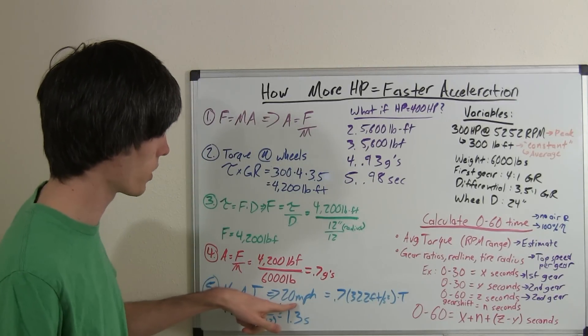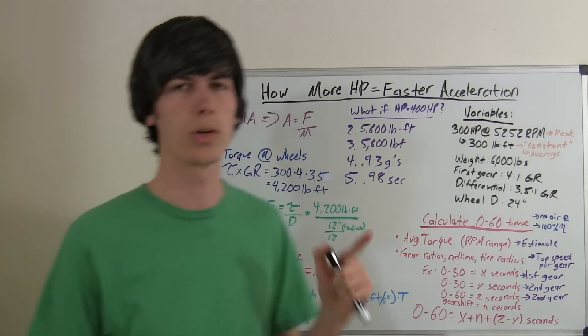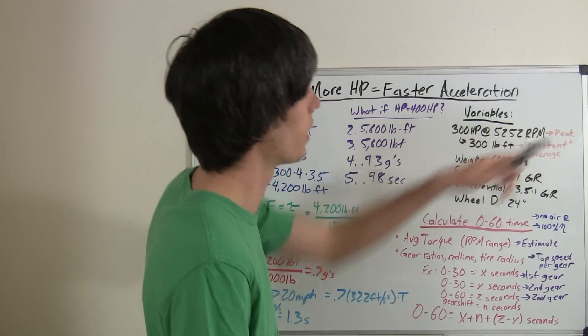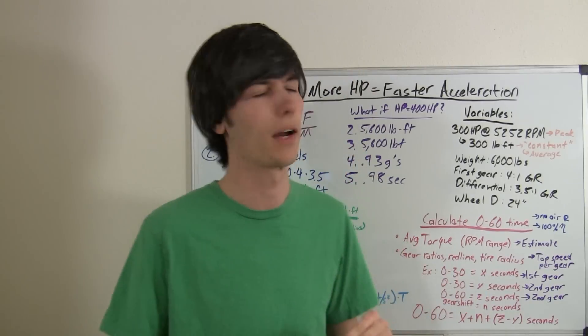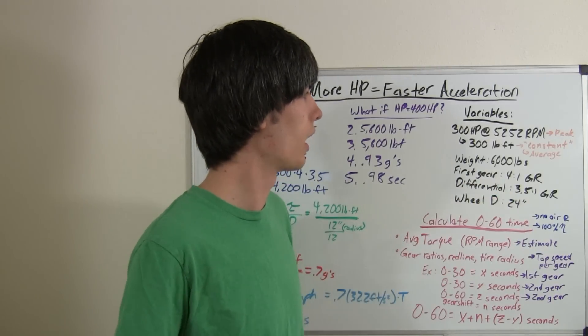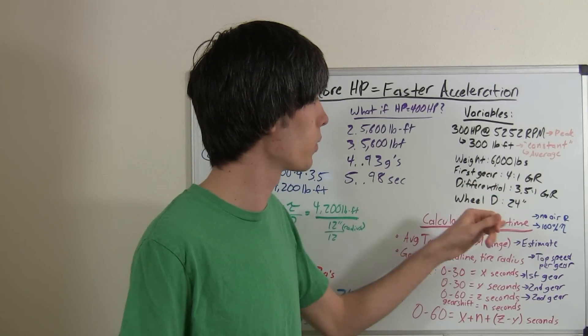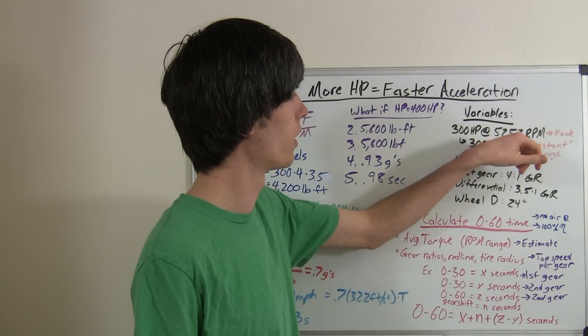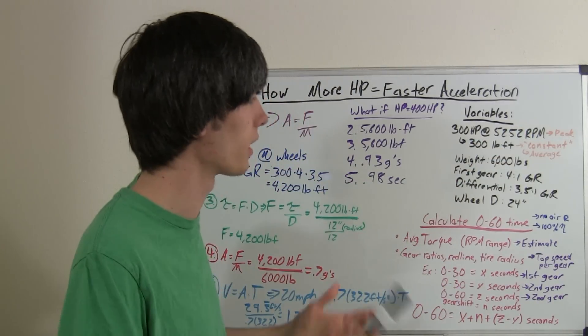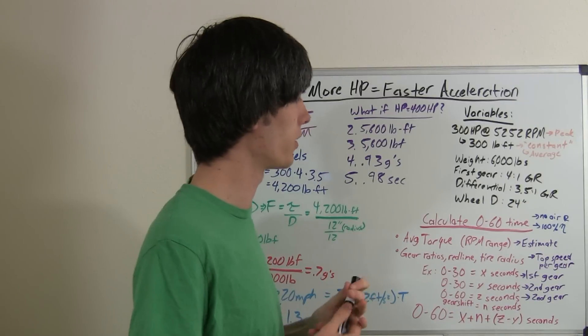So, if we know we want to get to 20 miles an hour. Now, the reason I picked 20 miles an hour is because this is our peak RPM. Our red line, basically, is going to be 5,252. So, if you have a 24-inch diameter wheel, and it can, with this gear ratio and this red line, its maximum speed in first gear is going to be something like 26 or 27 miles an hour.